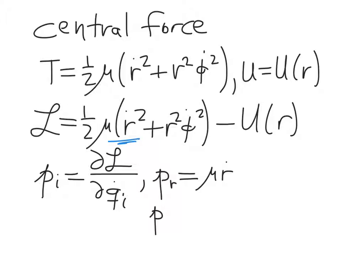Now, for phi, the generalized momentum is going to involve this term here. And so we're going to get mu r squared phi dot. So of course this is the angular momentum we're used to seeing. And here's just that linear momentum along the radial direction.